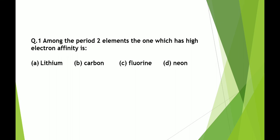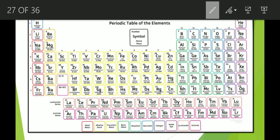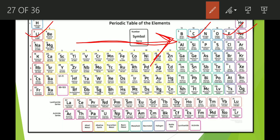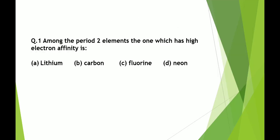The first question states that among the period two elements, the one which has high electron affinity. Four options are given: lithium, carbon, fluorine, neon. Looking at the periodic table, the trend of electron affinity across a period is that it increases from left to right. The highest value among period two elements will be fluorine. Neon is a noble gas — it is inert, its valence shell is already complete (octet achieved), so its electron affinity is zero. The answer is fluorine.